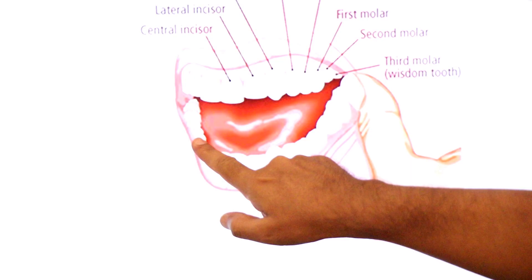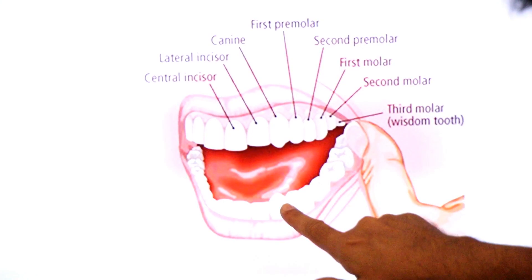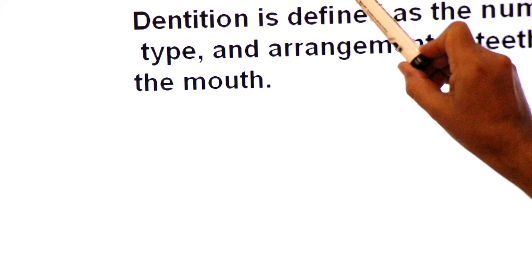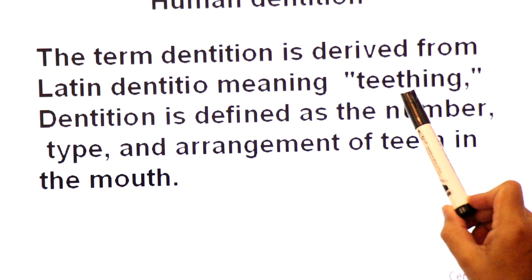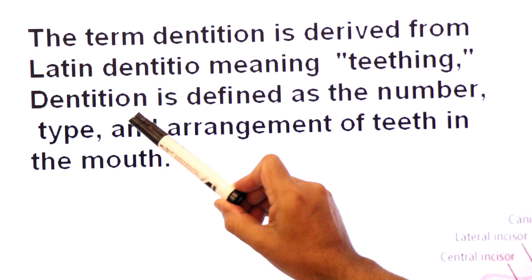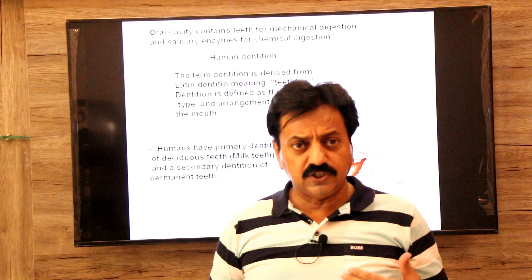The upper jaw contains maxillary teeth and the lower jaw contains mandibular teeth — 16 teeth in the upper jaw and 16 in the lower jaw. The study of types and arrangement of teeth is called dentition. The term dentition is derived from the Latin dentitio, meaning teething — the emergence of teeth through the gums. Dentition is defined as the number, type, and arrangement of teeth in the mouth.